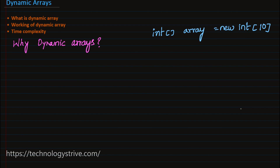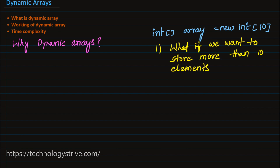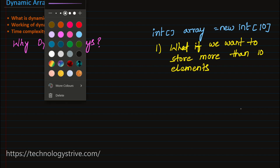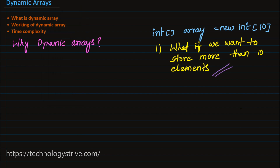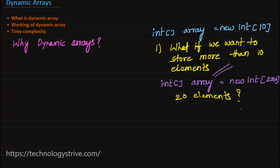The biggest disadvantage is: what if we want to store more than 10 elements? To avoid this, we can declare an array with a bigger size. But over time, if only 20 elements are occupied and we initialized the array with a very large value like 2000, then 20 is much less than 2000 — that's a waste of space.